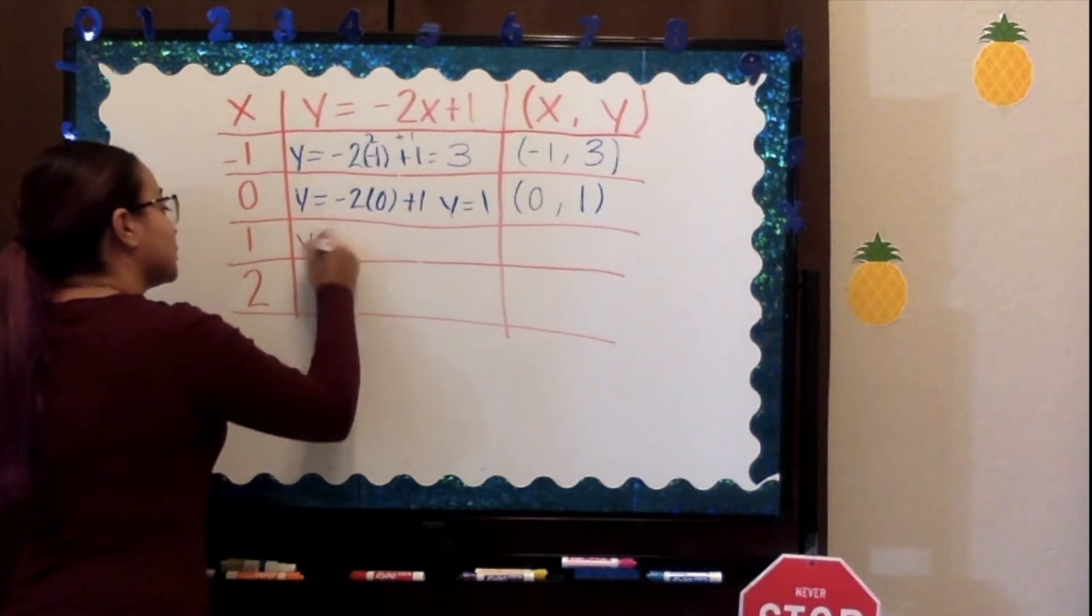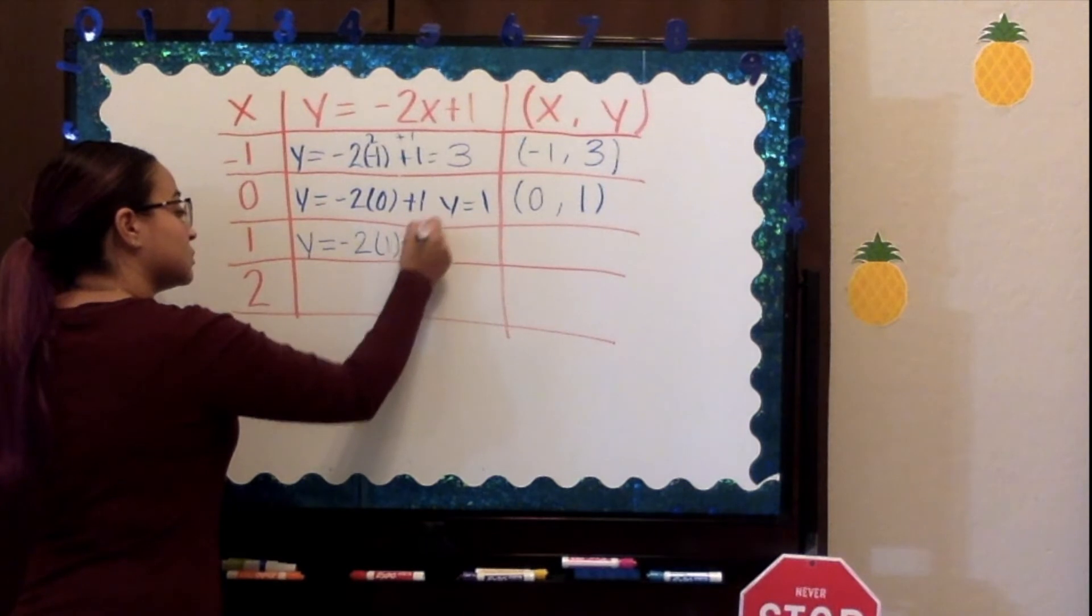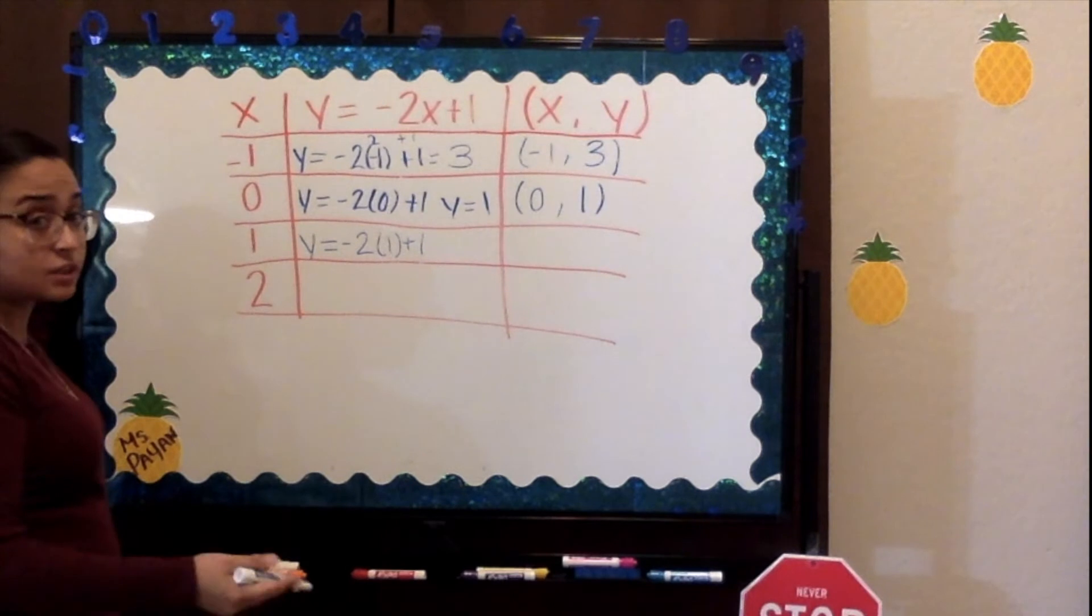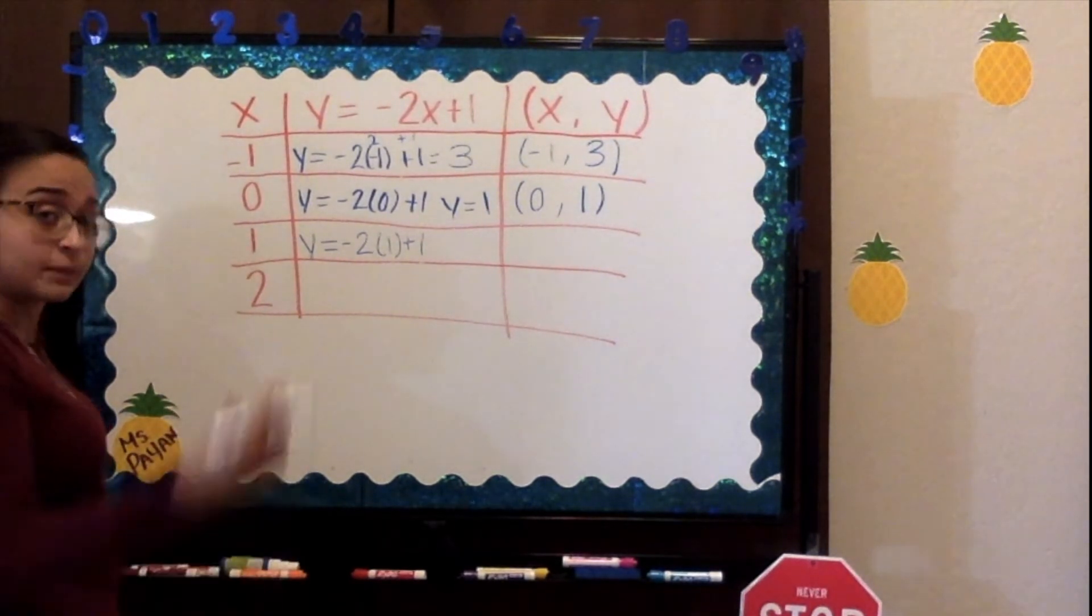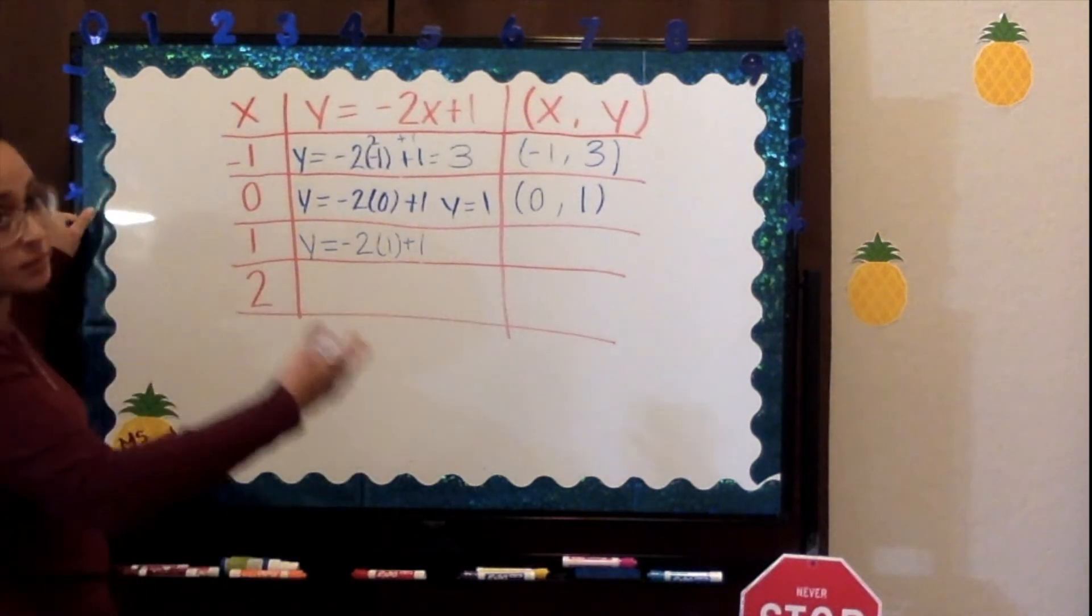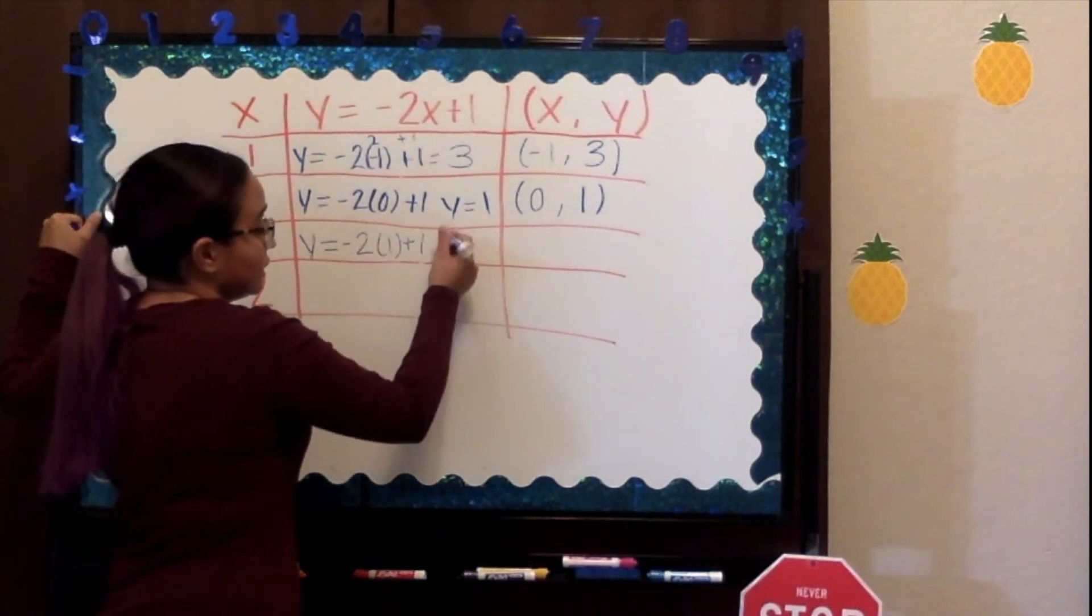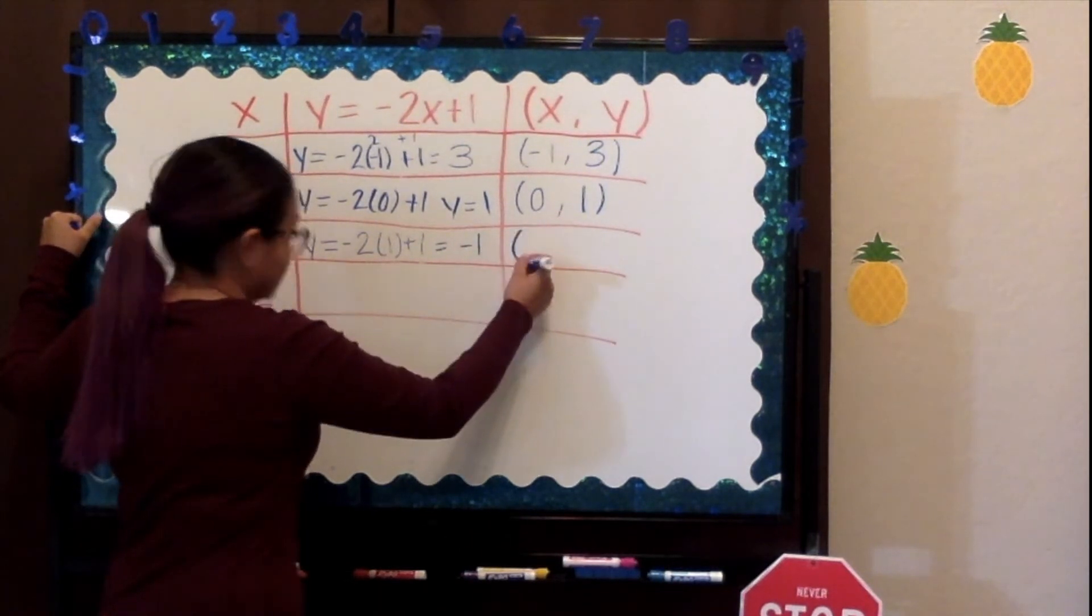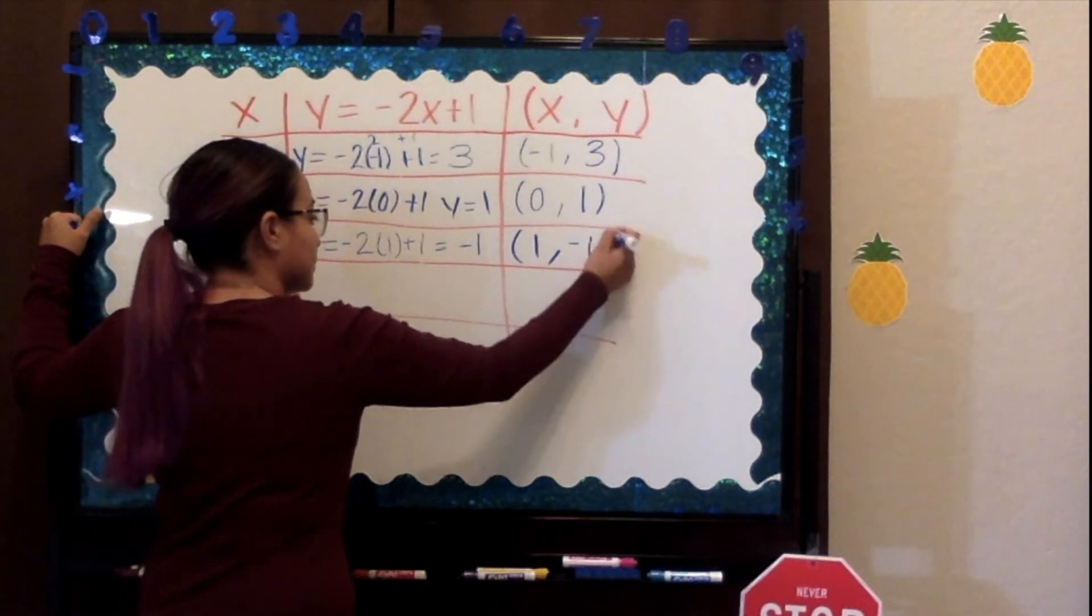Now we follow through with the 1. Negative 2 times 1, our answer is going to be negative 2 this time, because when you multiply a negative and a positive, your answer is negative. So we're left with negative 2. Negative 2 plus 1 leaves us with negative 1. Therefore, we are left with 1 for x and negative 1 for y.